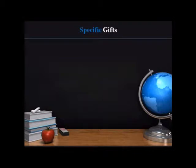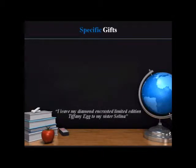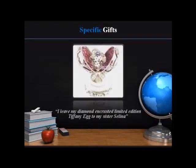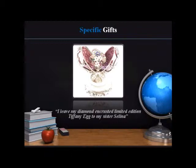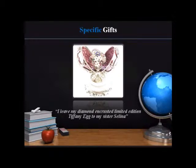Specific gifts are named gifts which are clearly identifiable from the rest of the estate. For example, I leave my diamond encrusted limited edition Tiffany egg to my sister Selena. As long as you only own one item that fits the description, it will classify as a specific gift. If you no longer own the item at the time of your death, the gift will redeem — in other words fail — and that beneficiary would not get anything in relation to that gift.